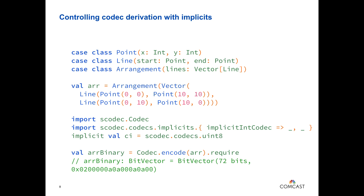We can do the same example but change the implicits available in implicit scope, so when deriving codecs at compile time the behavior changes. In this case, we do the exact same code but import the implicit package while hiding the implicit int codec. We define an explicit implicit of type codec Int using the unsigned int 8 value — an 8-bit unsigned integer rather than the default 32-bit one.